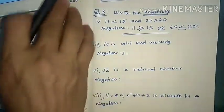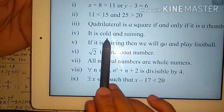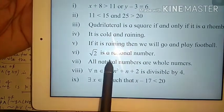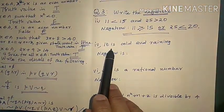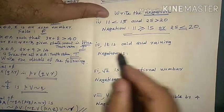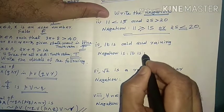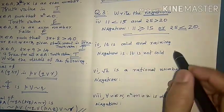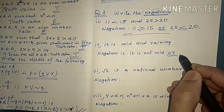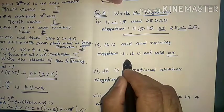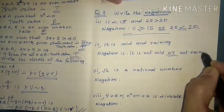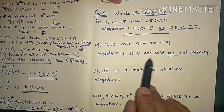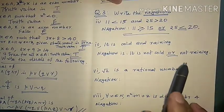Question number 4: 'It is cold and raining.' What is the negation? By De Morgan's law, the negation is 'It is not cold or not raining.' The conjunction 'and' becomes the disjunction 'or', and both parts are negated.